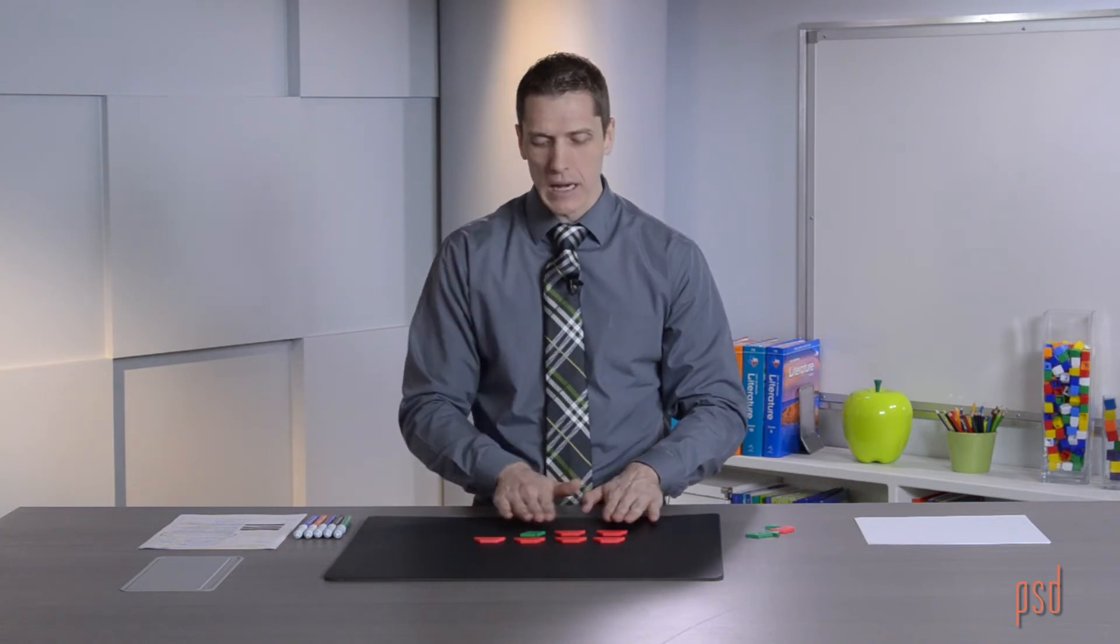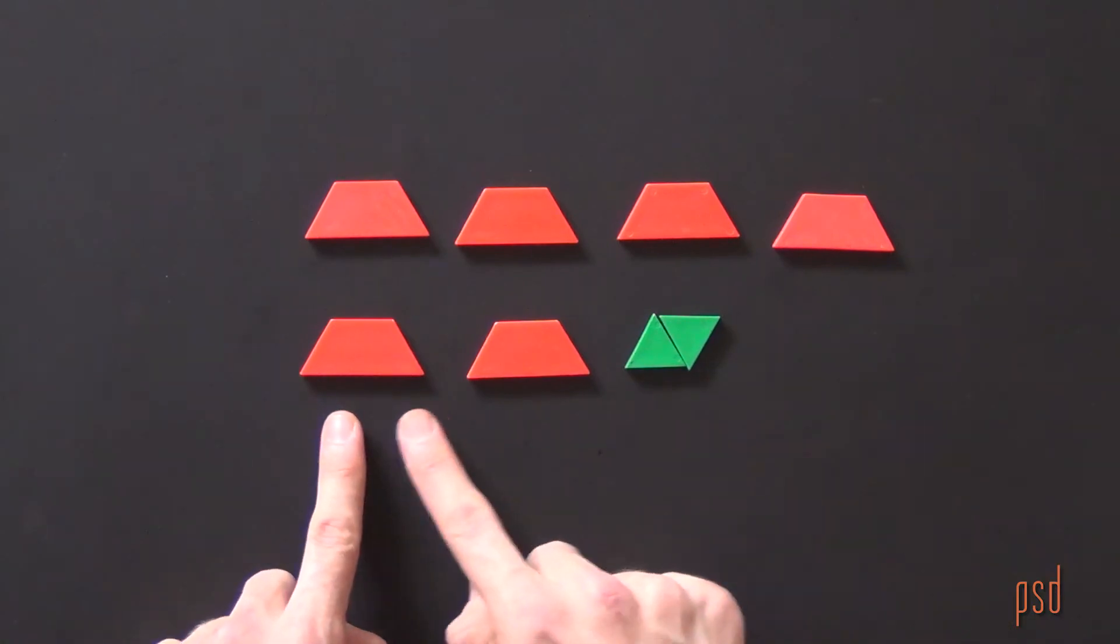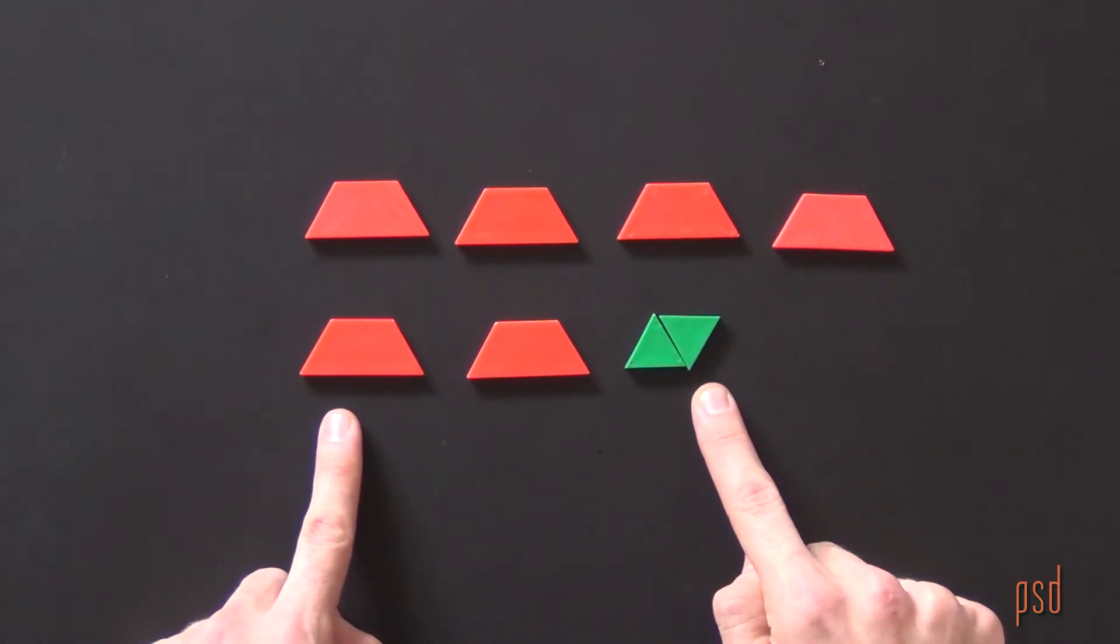This is a comparison type of problem. So I can line up my pieces. I see that she has 4 pounds of ham, 2 and 2 thirds pounds of turkey.